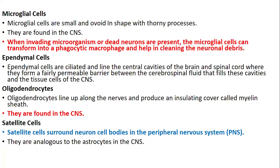Ependymal cells are ciliated and line the central cavities of the brain and the spinal cord, where they form a fairly permeable barrier between the cerebrospinal fluid that fills these cavities and the tissues of the central nervous system. Oligodendrocytes line up along the nerves and produce an insulating cover called the myelin sheath. They are found in the central nervous system.